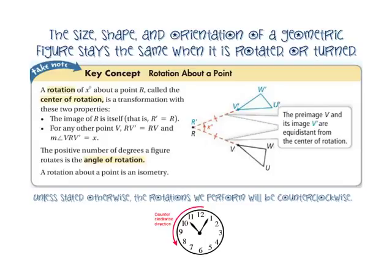A rotation of x degrees about point R, called the center of rotation, is a transformation with these two properties. The image of point R is itself — that is, R prime is equal to R.